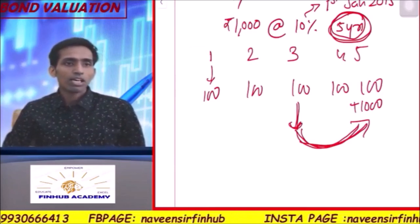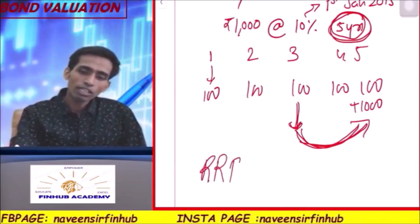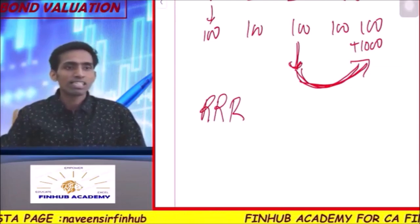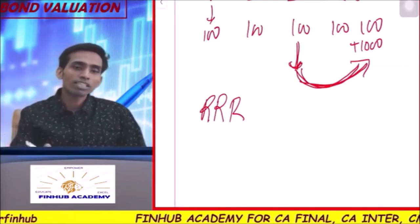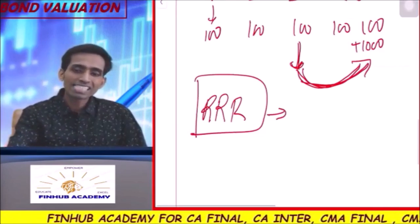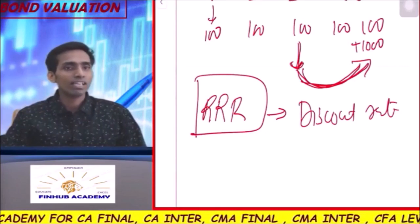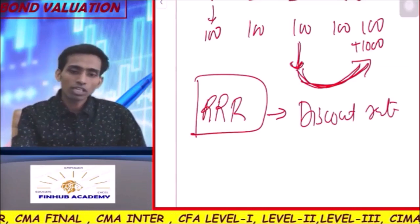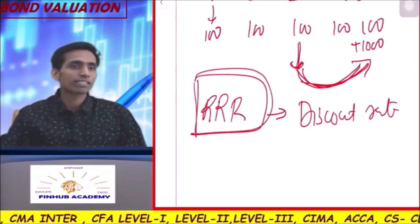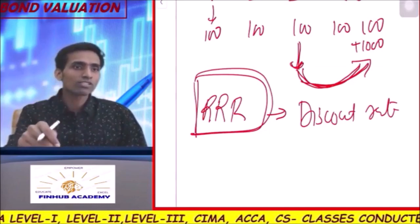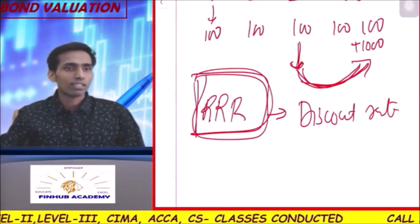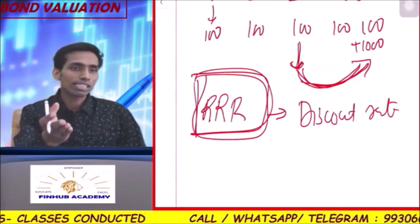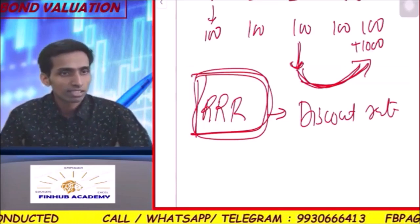There is also the required rate of return, or RRR — what the bondholder or investor requires as a return on the bond. It is also called the discount rate. In capital budgeting we used a discount rate to pull cash flows — that is the required rate of return. It is sometimes called interest rate too, so be careful: interest rate could refer to the coupon rate or to the required rate of return depending on context.